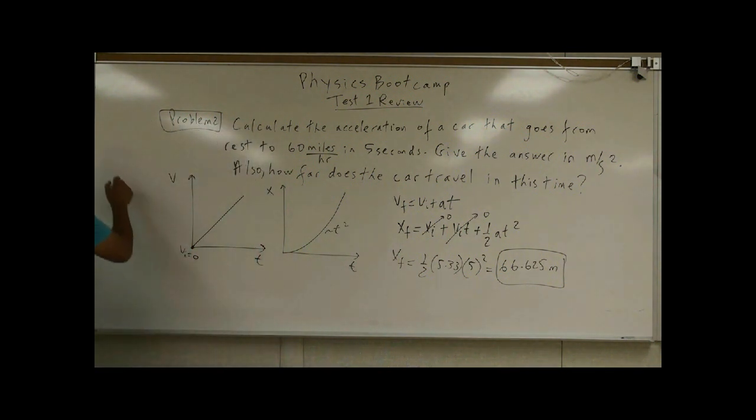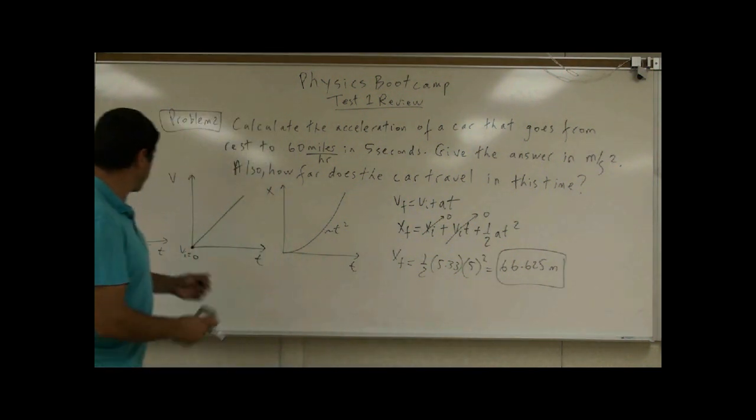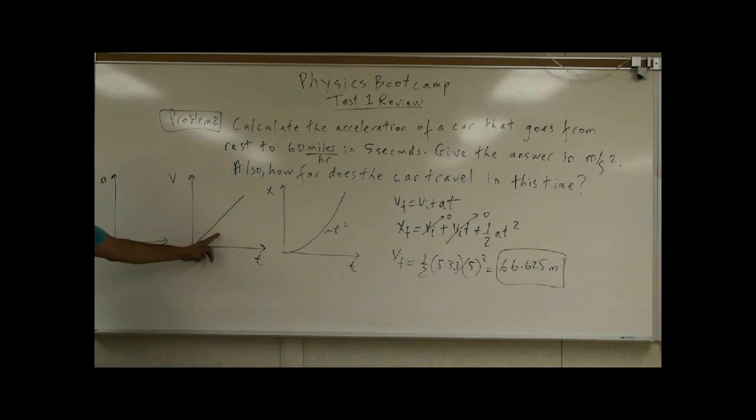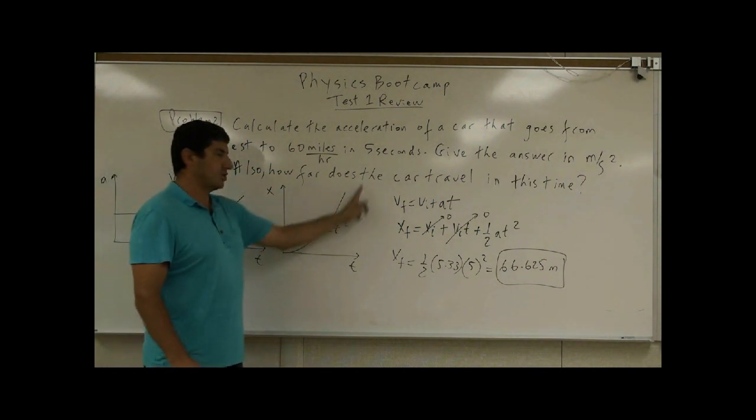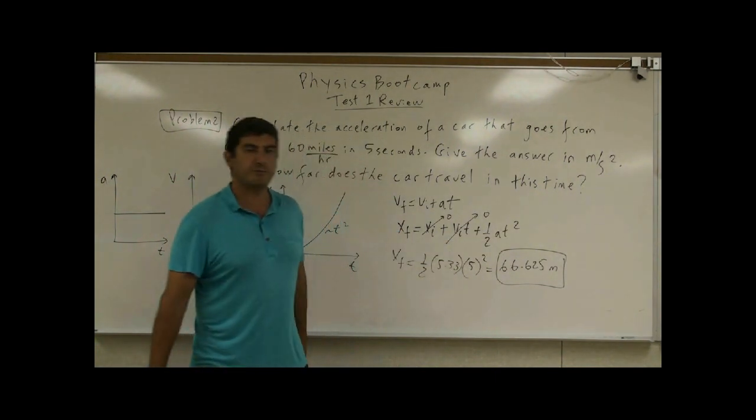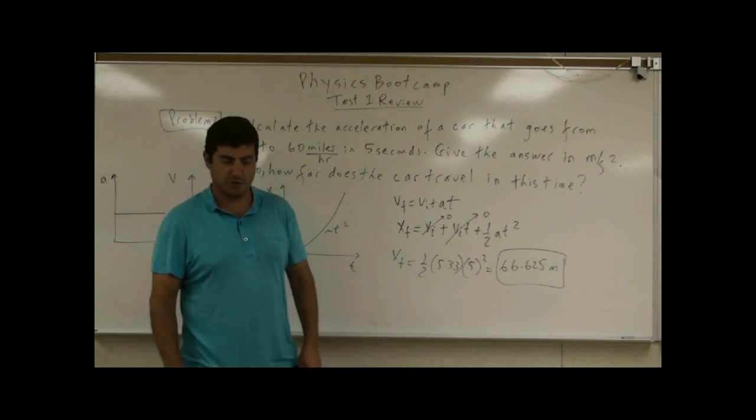And then what would the acceleration as a function of time be? In the language of calculus, we say acceleration is the derivative of velocity. So the acceleration is a constant. So a car that is accelerating at a constant rate has a constant acceleration. Velocity increases linearly. Position increases as square. And that's where this comes from. So that's how you solve it. Thank you.